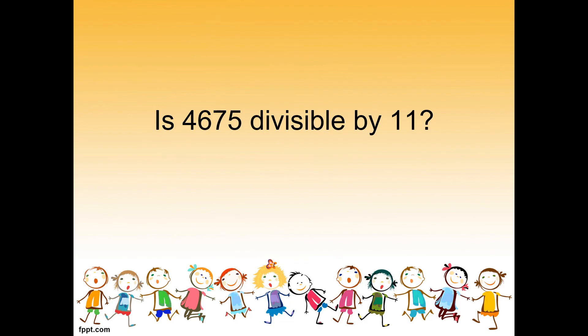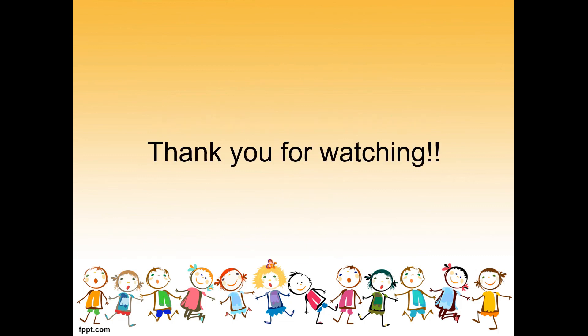Is 467 divisible by 11? 4 minus 6 equals negative 2, plus 7 equals positive 5 — wait, the answer is 0: 4 minus 6 is negative 2, plus 7 is 5, minus 5 is 0. Yes, 467 is divisible by 11. I hope you learned about divisibility rules by 4, 8, 11, and 12. Thank you for watching — this is your teacher Carmy, don't forget to like and subscribe.